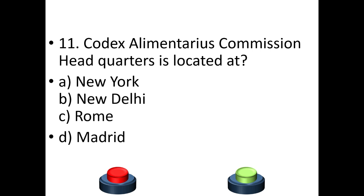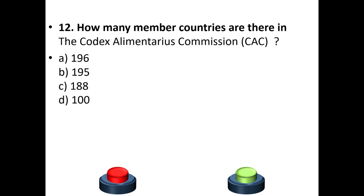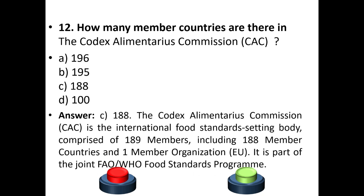Eleventh question: The Codex Alimentarius Commission headquarters is located at — New York, New Delhi, Rome, or Madrid? The answer is option C — Rome. Twelfth question: How many member countries are there in the Codex Alimentarius Commission (CAC)? A) 196, B) 195, C) 188, D) 100. The answer is option C — 188. The CAC is the international food standard-setting body comprising 189 members total: 188 member countries plus one member organization, the European Union.